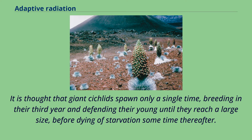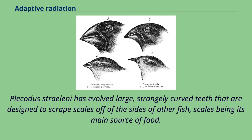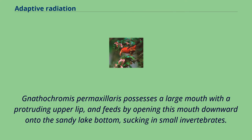The three species of Altolamprologus are also piscivores, but with laterally compressed bodies and thick scales enabling them to chase prey into thin cracks in rocks without damaging their skin. Perissodus straeleni has evolved large, strangely curved teeth designed to scrape scales off the sides of other fish, scales being its main source of food. Macrochronis permaxillaris possesses a large mouth with a protruding upper lip, and feeds by opening this mouth downward onto the sandy lake bottom, sucking in small invertebrates.